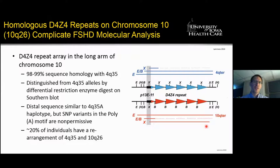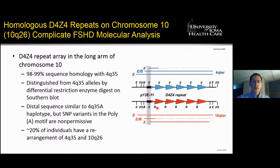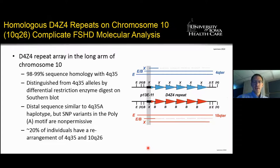Another complicating factor of molecular diagnosis is that the D4Z4 repeat has a homologous sequence on chromosome 10, sharing 98 to 99% sequence homology. They can be distinguished using restriction enzyme digest and southern blot analysis because there are different restriction sites — an XAP restriction enzyme site in the 4-type alleles and BLN restriction sites in the 10-type alleles. When you digest with EcoR1 alone, you're not able to differentiate 4- and 10-type alleles. But with additional digests using EcoR1 and BLN, or XAP1 by itself, you can discriminate chromosome 4 from chromosome 10 alleles.